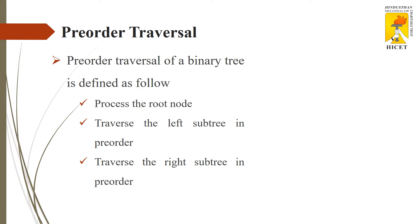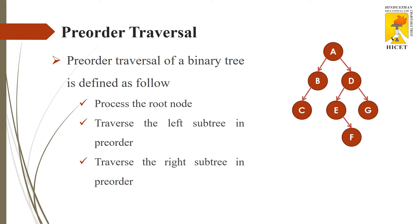We will see about pre-order traversal. In pre-order traversal, first I have to process the root node, then I have to go to the left subtree, then I have to traverse the right subtree. In this tree example, my first step is to process the root node, which is A. So first, process A.